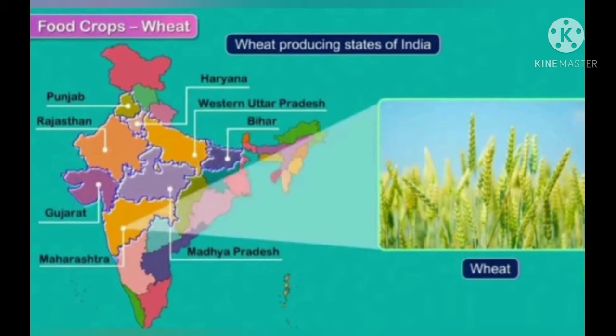Wheat producing states of India are Haryana, Western Uttar Pradesh, Bihar, Madhya Pradesh, Maharashtra, Gujarat, Punjab, and Rajasthan.